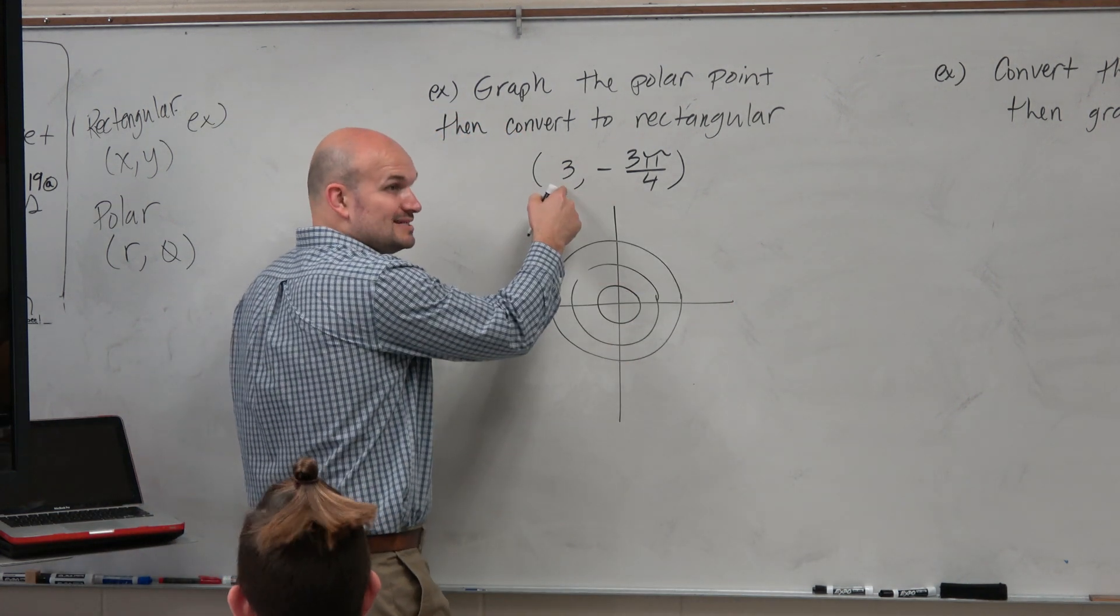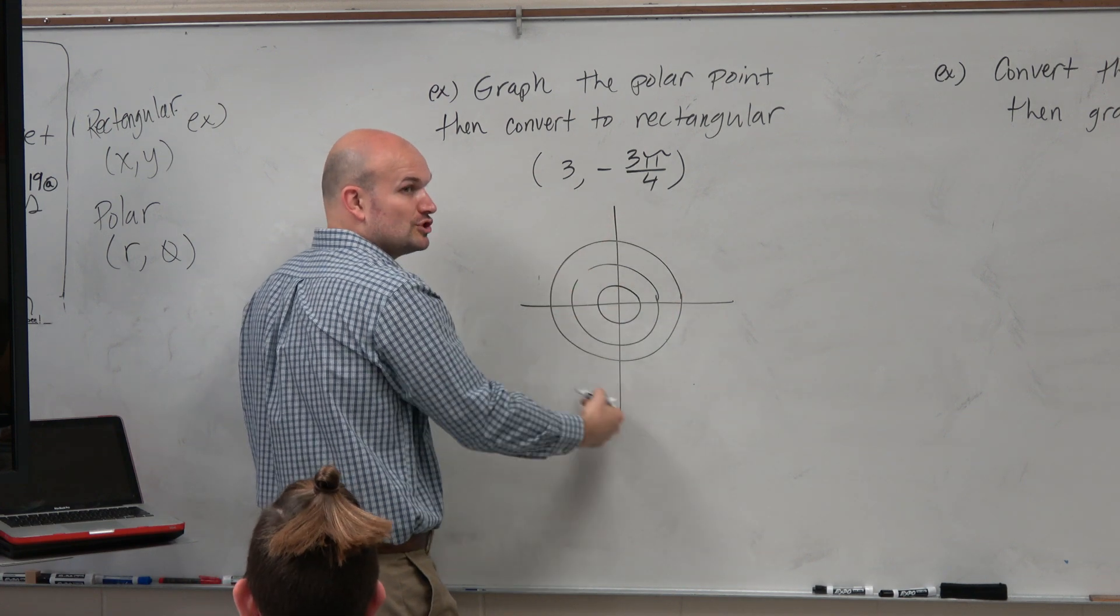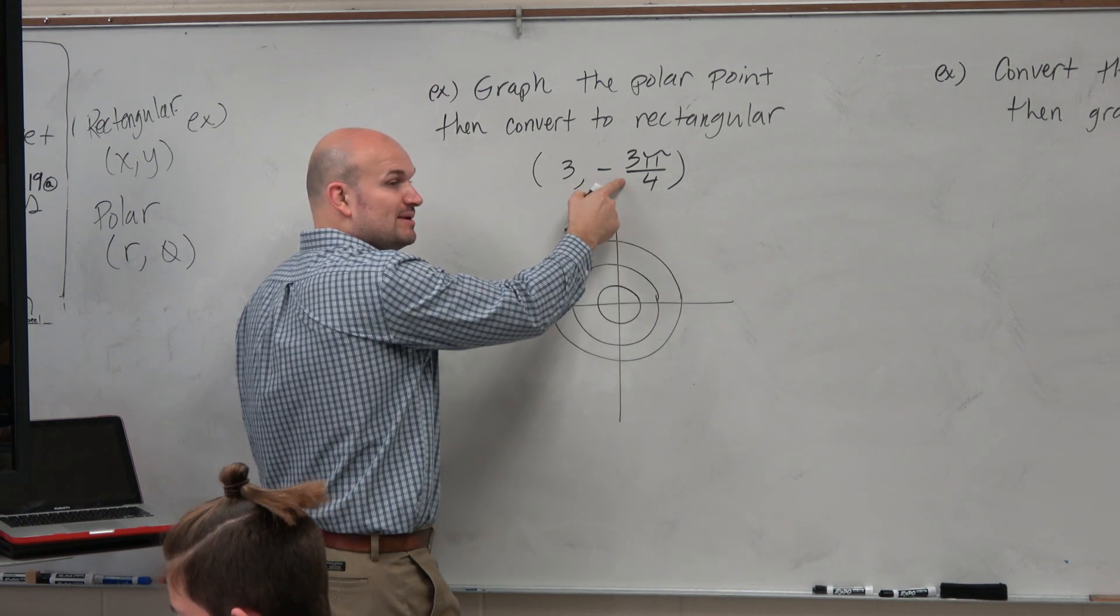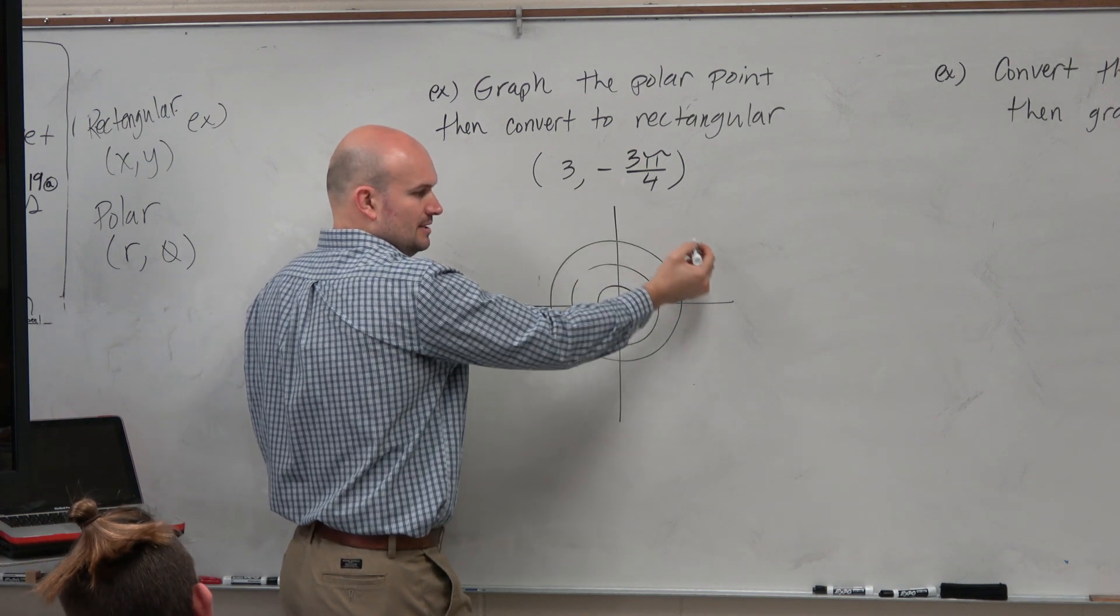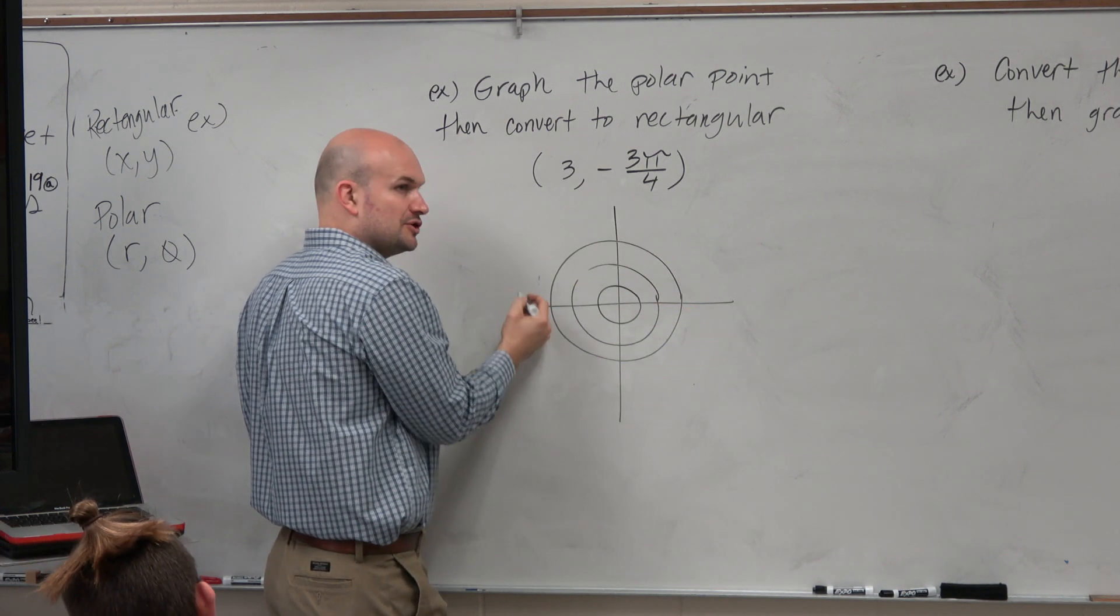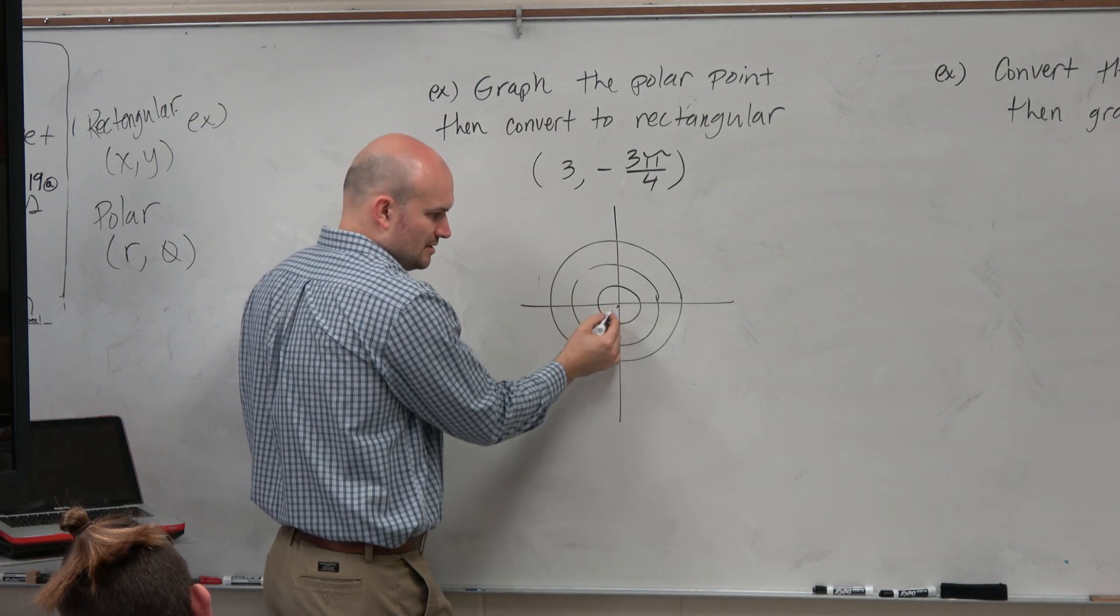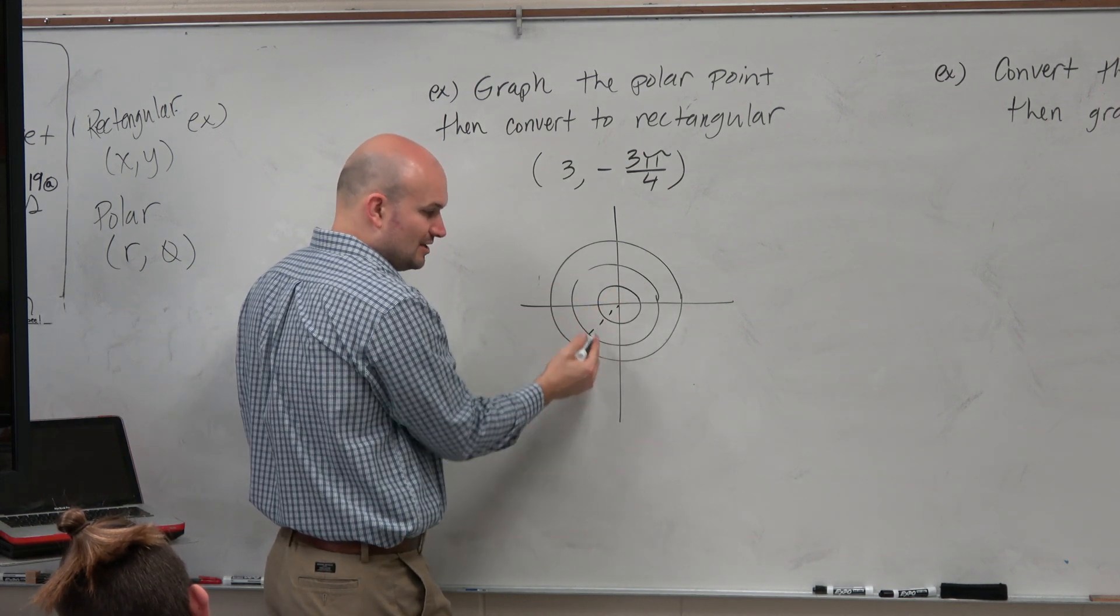But anyways, 3 tells you the radius. So we're going to be using the outer ring, correct? Then we just need to find where is negative 3 pi over 4. Well, obviously guys, positive this way, negative this way, halfway around circles 4 pi over 4. We need to be pi over 4 short, which is, right? That's the angle.